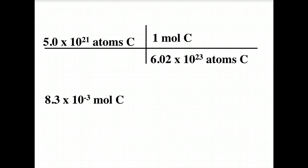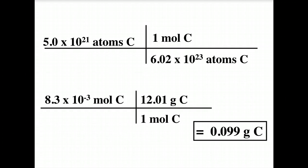And, then, there was a further question: how many grams is that? So, we look to our periodic table. Find the mass of 1 mole of carbon as 12.01 grams. Use your calculator. Mass ends up being 0.099 grams of carbon.